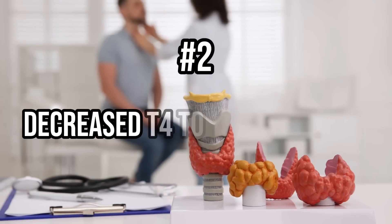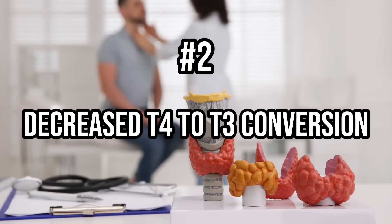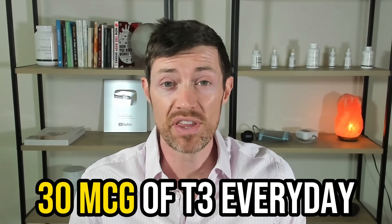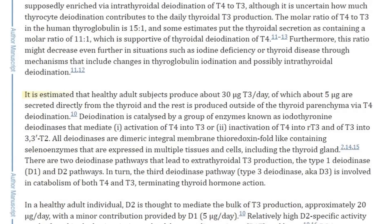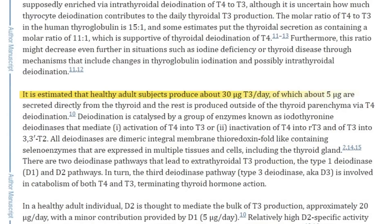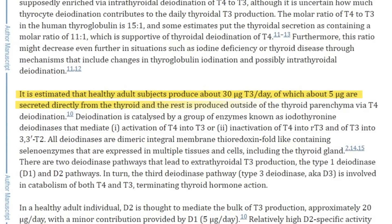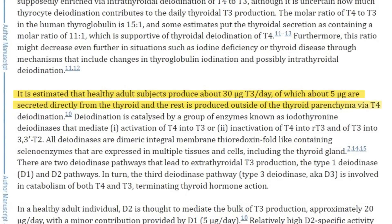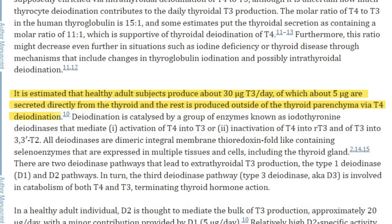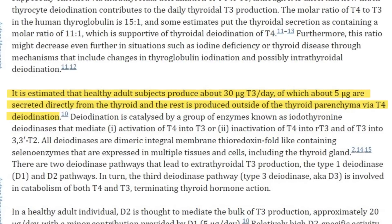Number two is decreased T4 to T3 conversion. If you are healthy, you can expect to produce about 30 micrograms of T3 thyroid hormone every day. Of this 30 micrograms, only about 5 micrograms are created by the thyroid gland directly, and the rest — about 25 micrograms — is created through the process of T4 to T3 conversion. The majority of thyroid hormone produced by the thyroid gland comes in T4 form, and the majority of T3 created by the body comes from the conversion of T4 into T3.